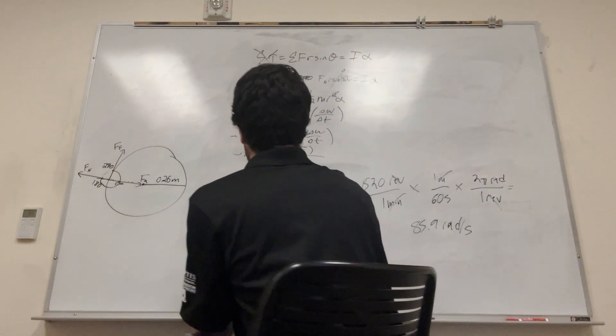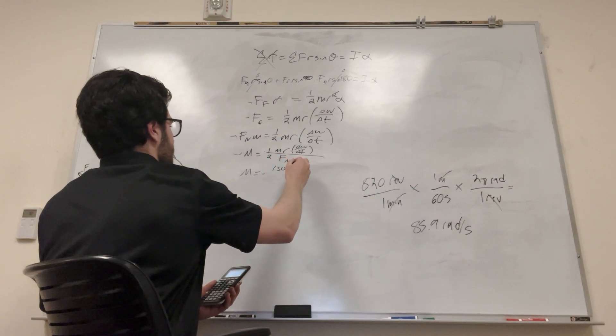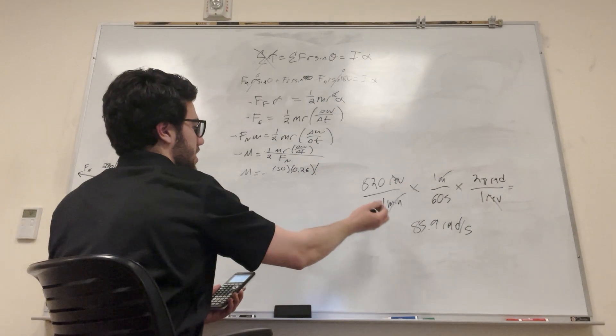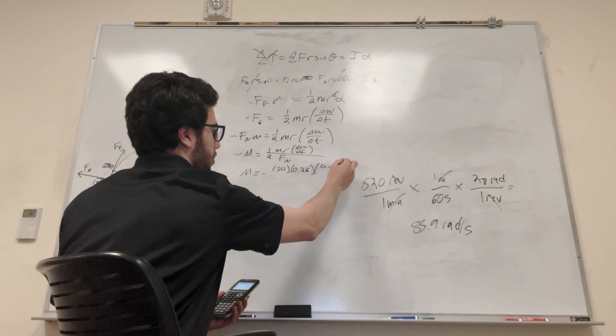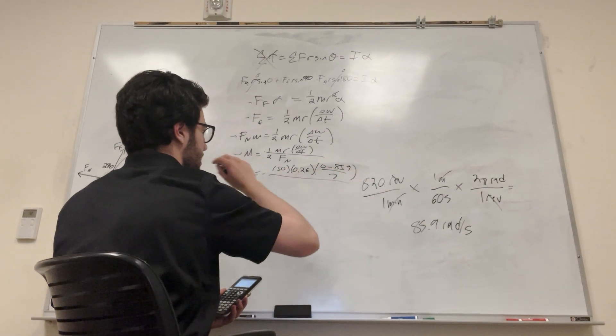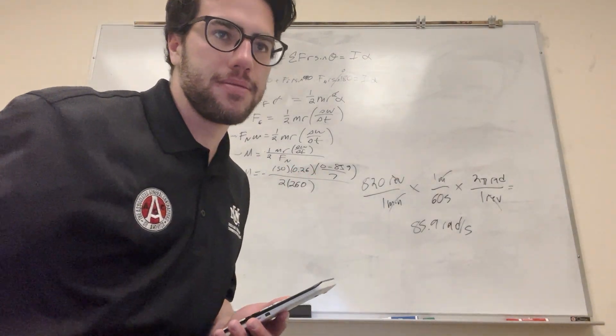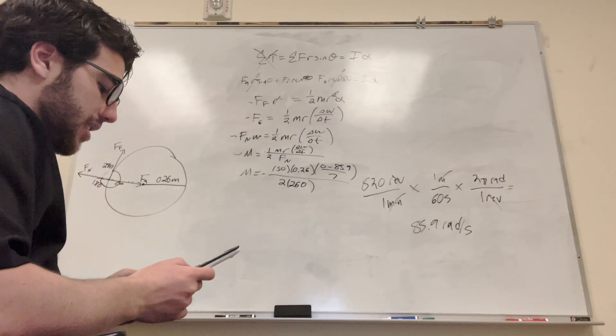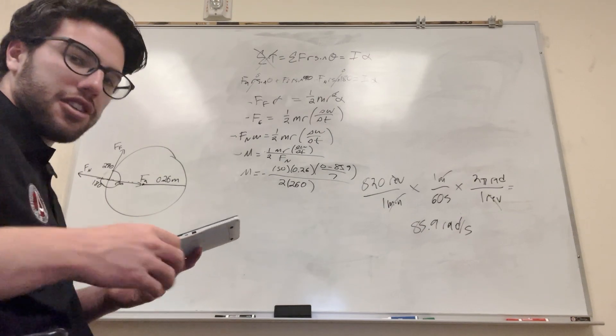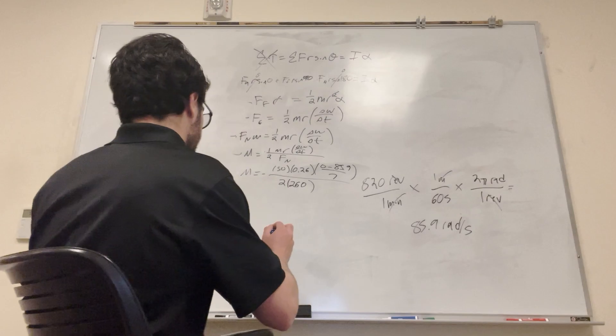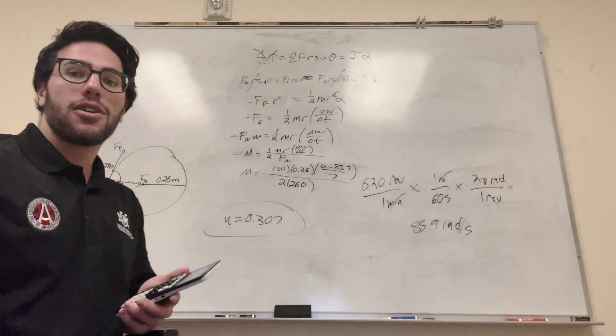This is going to be 85.89 radians per second. So then what we can do is just plug all this in. So I'm going to move that negative over. So the mass is 50. The radius is 0.26. Change in velocity is final minus initial, so it's going to be 0 minus 85.9 divided by 7, which is how long it took to get to stopping. And then 2 times the force normal, which is 260. Okay, you plug this into your calculator and you get 0.31, or 0.307. And there you go. That's the coefficient of friction.